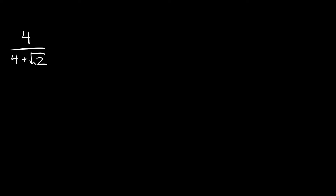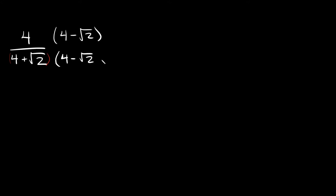Here we have 4 over 4 plus the square root of 2. As you can see, we have an expression in the denominator because we have a 4 plus attached to the radical. So what we have to do here is a little different — we have to multiply by the conjugate. All that means is we multiply by this exact same expression on top and bottom, but we change the sign. Since we have a plus sign, we change it to a subtraction sign. So we multiply the top by 4 minus root 2, and the bottom by 4 minus root 2.